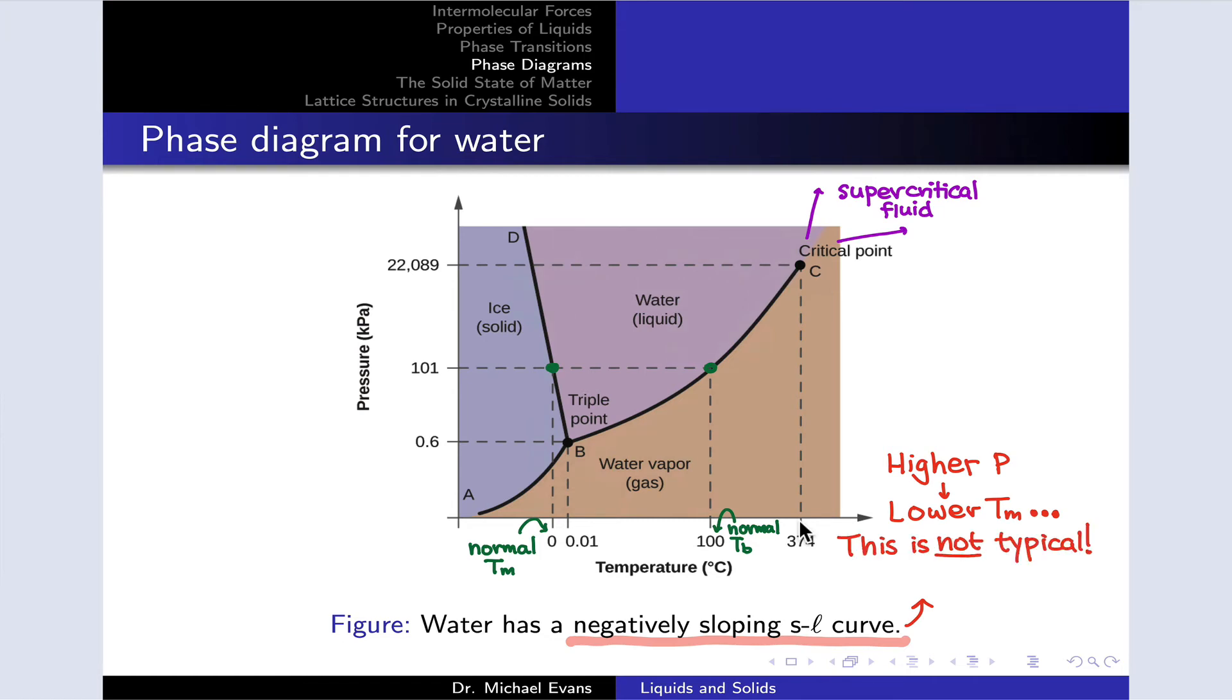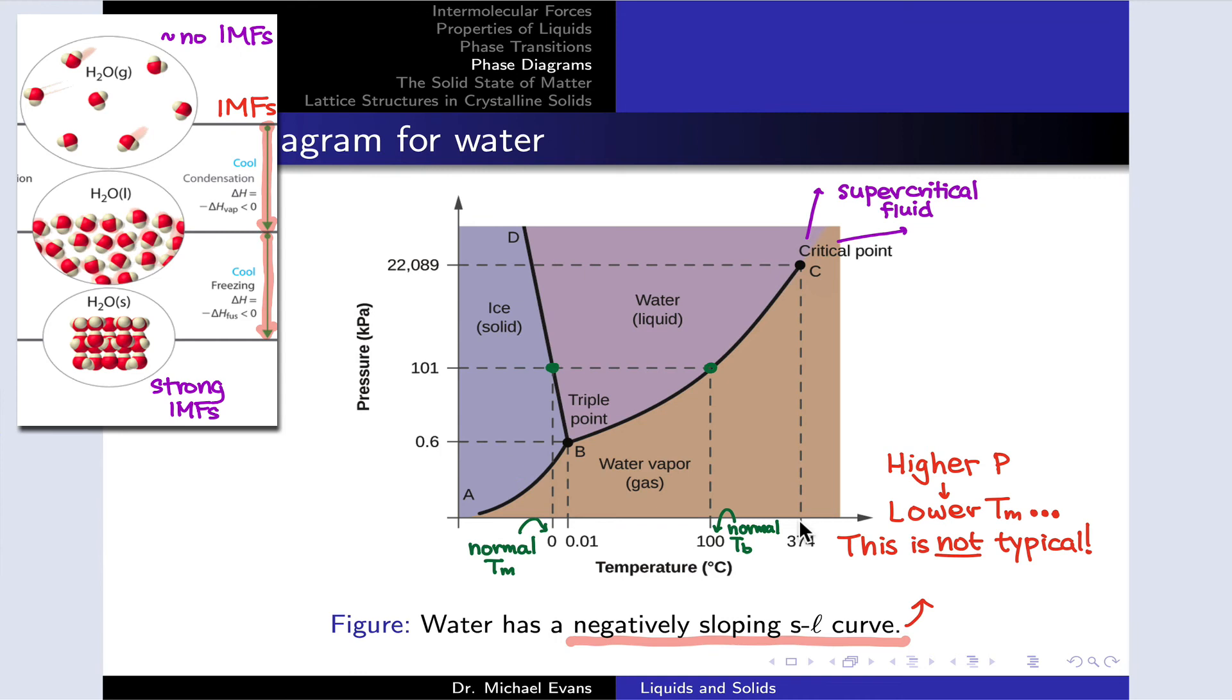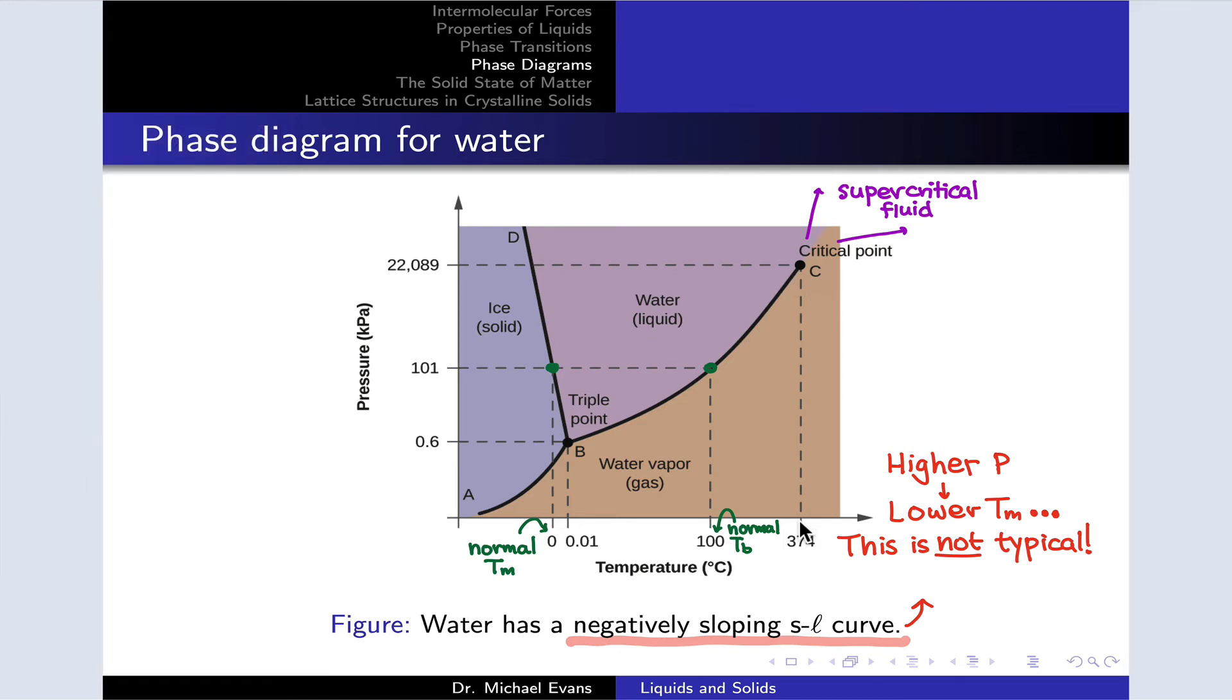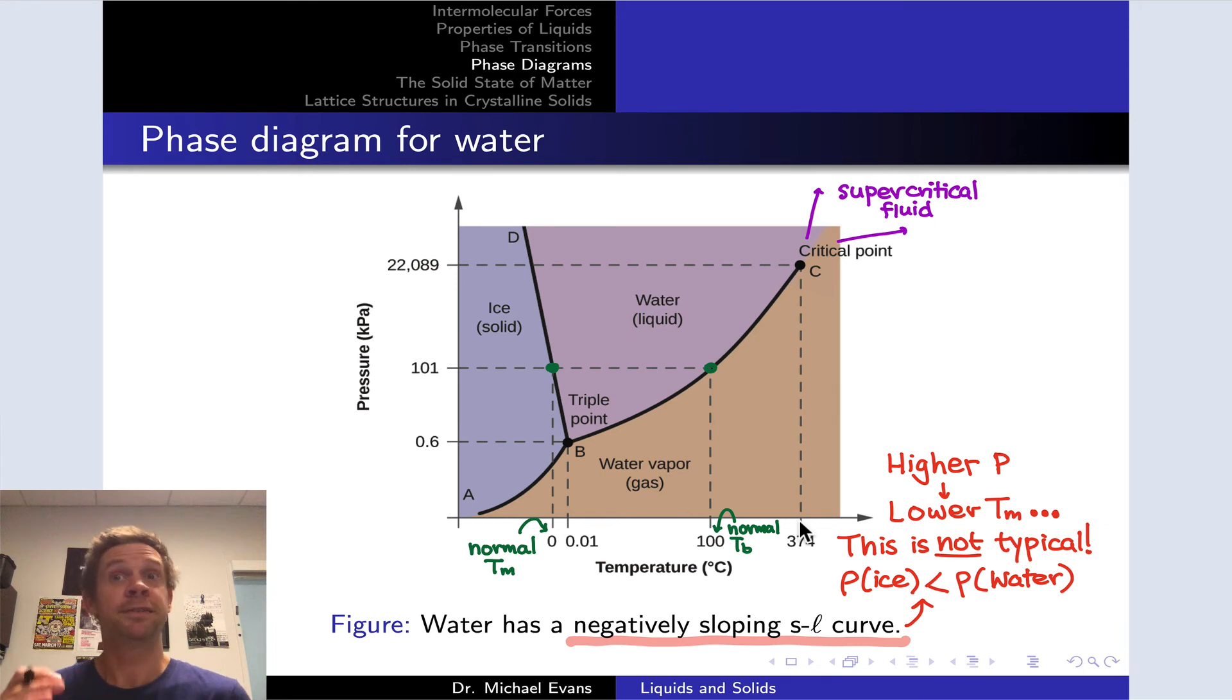This is not normal. Since the solid is typically more dense than the liquid, pressing down on a solid should cause it to remain solid, not liquefy. For water, this is not the case. The density of ice is actually lower than the density of water—ice is less dense than water. You know this from everyday life: ice floats in water. This means that when I press down on ice and get the molecules closer together, I can actually go from the less dense solid phase to the more dense liquid phase.